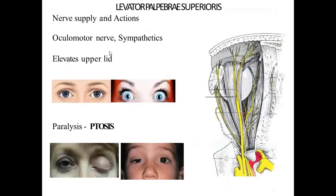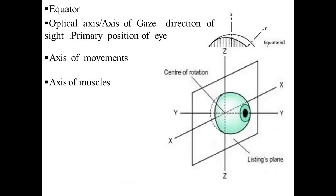The nerve supply and action: the oculomotor nerve supplies the levator palpebrae superioris and it elevates the upper eyelid. Paralysis leads to ptosis. In the diagram, the injury to the levator palpebrae superioris causes this condition — paralysis of the levator palpebrae superioris. You can also observe the optical axis, the axis of gaze, the direction of sight in primary position, and the axis of movements.